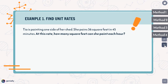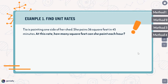A unit rate compares the first quantity for every one unit of a secondary quantity. If I tell you that my car uses 36 gallons in seven hours, I need to find how many gallons that car uses in one hour — that's going to be the unit rate. So let's begin. We have an example here — in example number one, we need to find the unit rate for this problem.